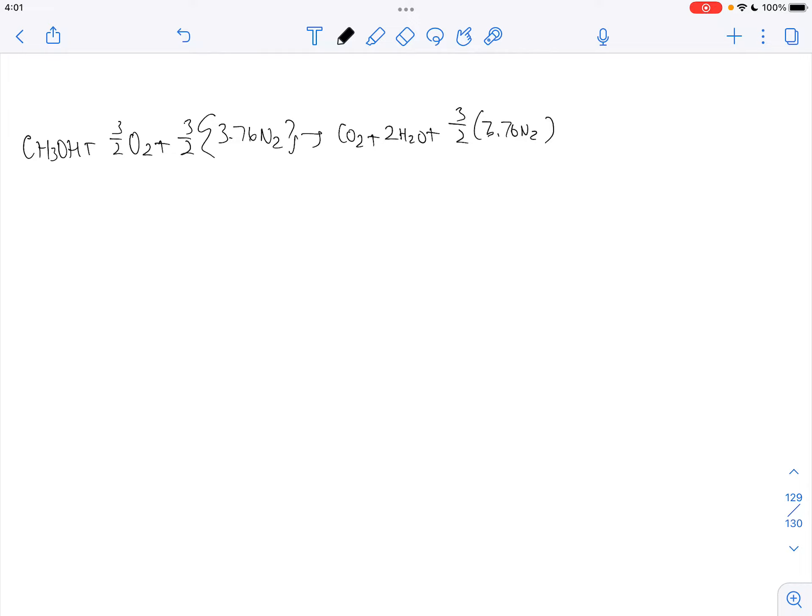So for our equivalence ratio of 0.75, we can go ahead and simplify this. We can also balance our equation. We have CH3OH plus 2O2 plus 2 times 3.76N2, going to CO2 plus 2H2O plus 7.52N2 plus 0.5O2. So here is our balanced chemical equation.